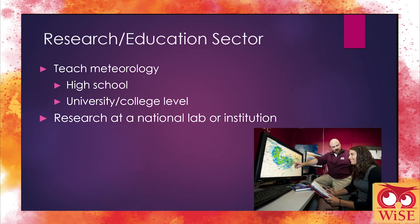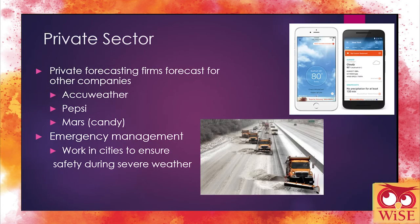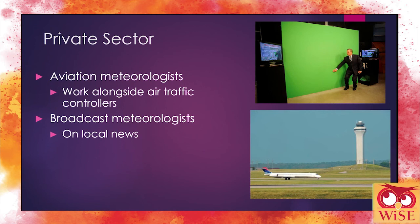In the research and education sector, you could teach meteorology — either at the high school level, or if you get your master's and PhD, at a university or college level — or perform various research at national labs or institutions to advance our knowledge of meteorology and improve forecasting. In the private sector, lots of firms want private forecasters — for example, shipping companies want to make sure shipments arrive on time without losing product. Companies like AccuWeather provide apps and weather information for people. There's also emergency management, working in cities to make sure people don't get hurt during severe weather events and getting the word out on what people need to do.